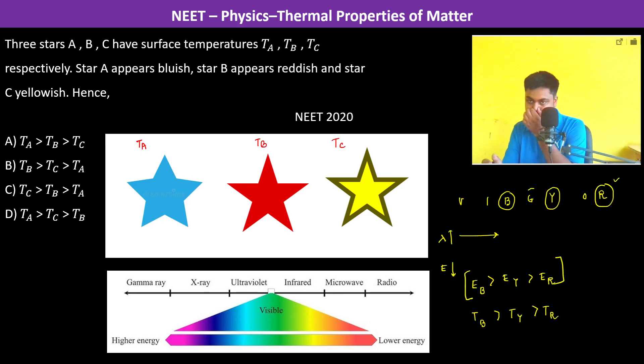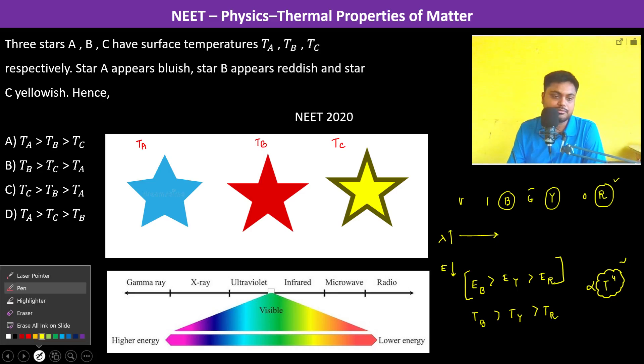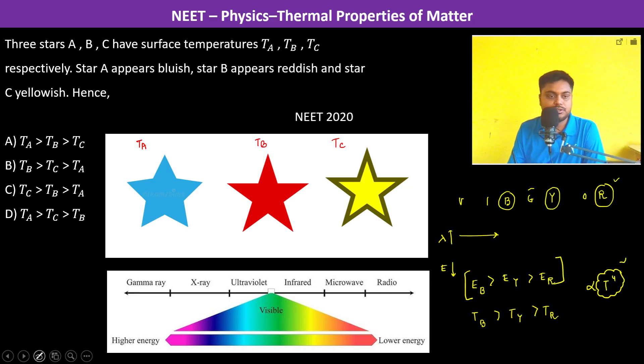Why should it be greatest? Because the energy which is radiated is proportional to T to the power 4. Whichever has the most temperature will radiate the energy most, and that is why the wavelength which has the maximum energy will be emitted.